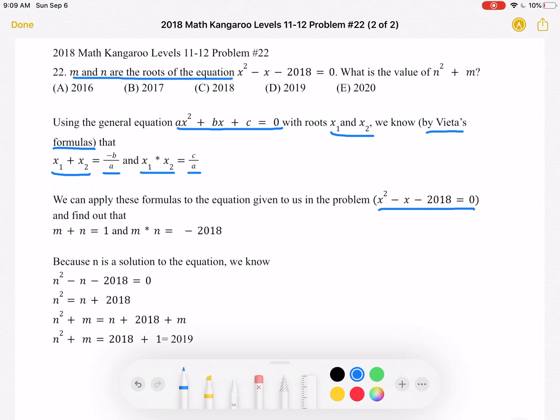we can find out that m + n, the sum of the roots, must be equal to 1, because we take negative b, and in this case, b is negative 1, so negative negative 1 is positive 1, over a, which we know is 1, because we have 1x². And that's equal to 1.